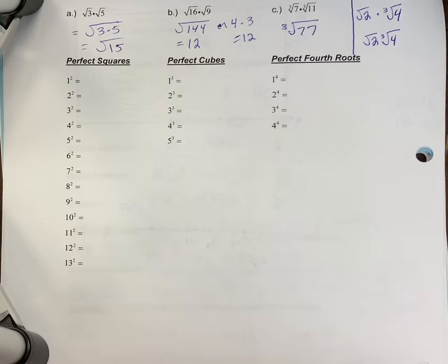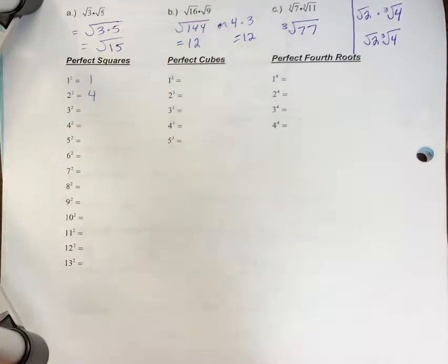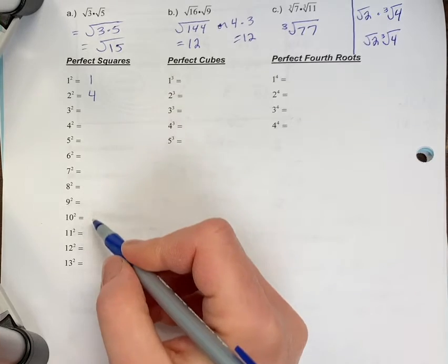So I feel like perfect squares you're most likely comfortable with. So one squared is one, two squared is four. In fact, if you want, you can pause the video and see how far you can go without your calculator.